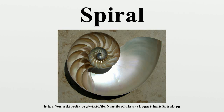The Triskelion symbol, consisting of three interlocked spirals or three bent human legs, appears in many early cultures, including Mycenaean vessels, on coinage in Lycia, on staters of Pamphylia and Pisidia, as well as on the heraldic emblem on warrior shields depicted on Greek pottery.